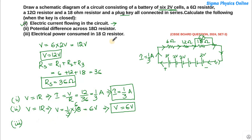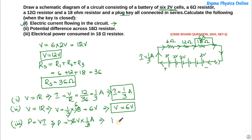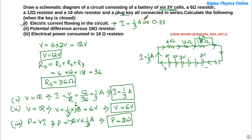The third part asks for the power consumed in the 18-ohm resistor. The formula for power is: Power equals voltage multiplied by current. The voltage across the 18-ohm resistor is 6 volts and the current is 1/3 ampere, so Power equals 6 times 1/3, which equals 2 watts. The power consumed in the 18-ohm resistor is 2 watts.